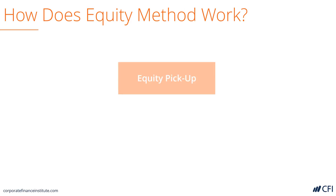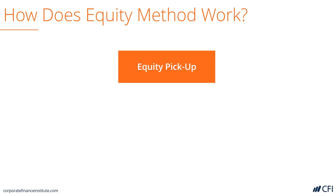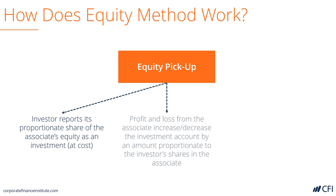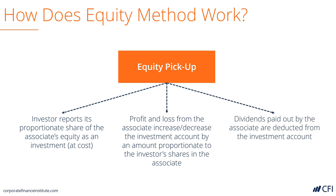Let's look at how it actually works. We'll explain the concept of an equity pickup. The first step is an investor reports the investment that they made in the associate at cost. Then, all of the profits and losses from the associate increase or decrease that investment by the proportionate share ownership. And then finally, any dividends paid out from the associate are a reduction in the investment account.